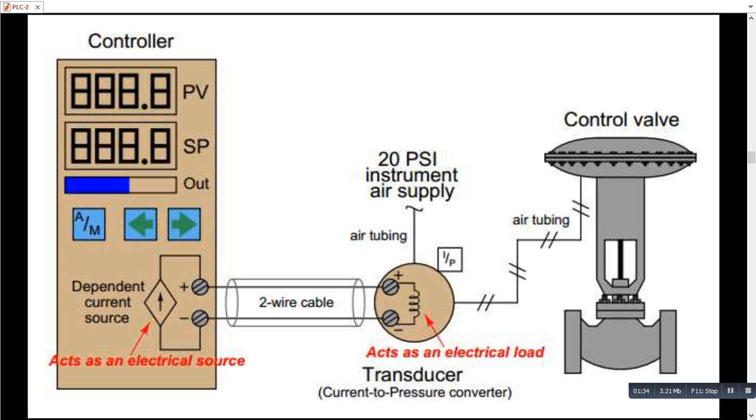This is the output loop in which we have an intermediate device known as I2P converter which converts current 4 to 20 mA to pneumatic signal 3 to 15 PSI. So this device needs 20 PSI as an instrument supply source. And then it takes 4 to 20 mA as an input signal and gives 3 to 15 PSI output signal to the control valve assembly inside to operate it. So this is the output signal.